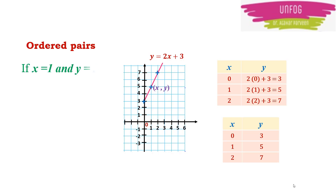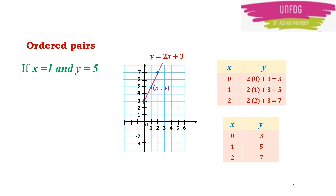I'll explain what an ordered pair is with an example. If you have x = 1 and y = 5, then you have to write these coordinates of x and y in the same order. You cannot write x = 5 and y = 1 — that would be wrong. You have to write the value of x in the place of x only and the value of y in the place of y only.